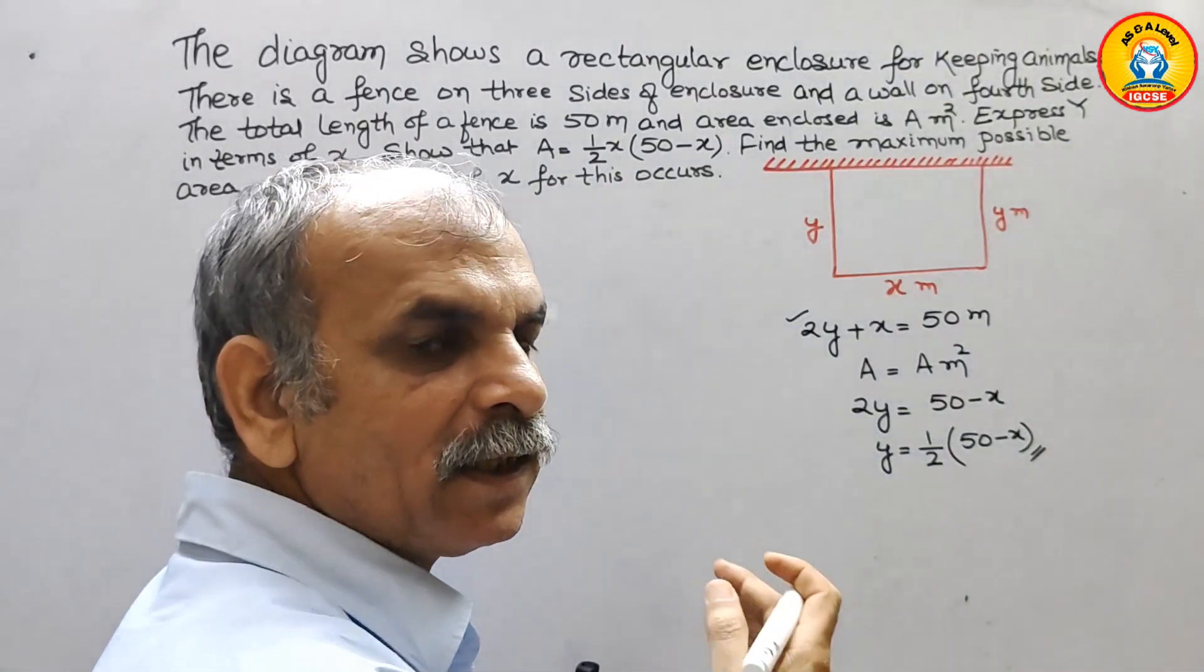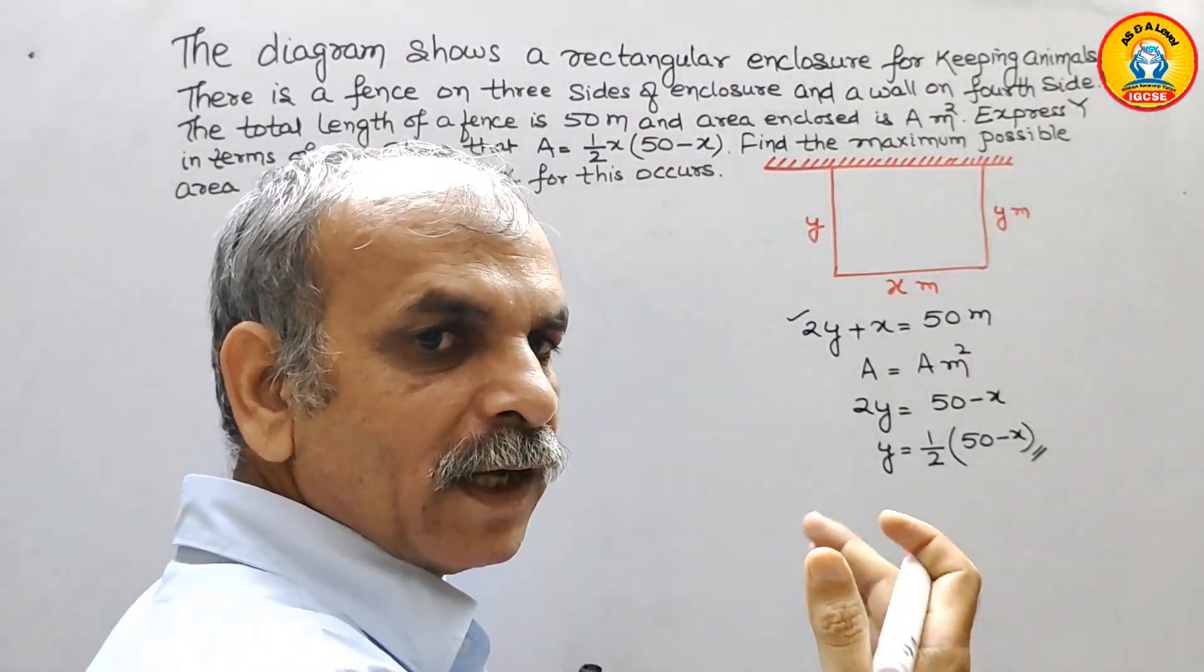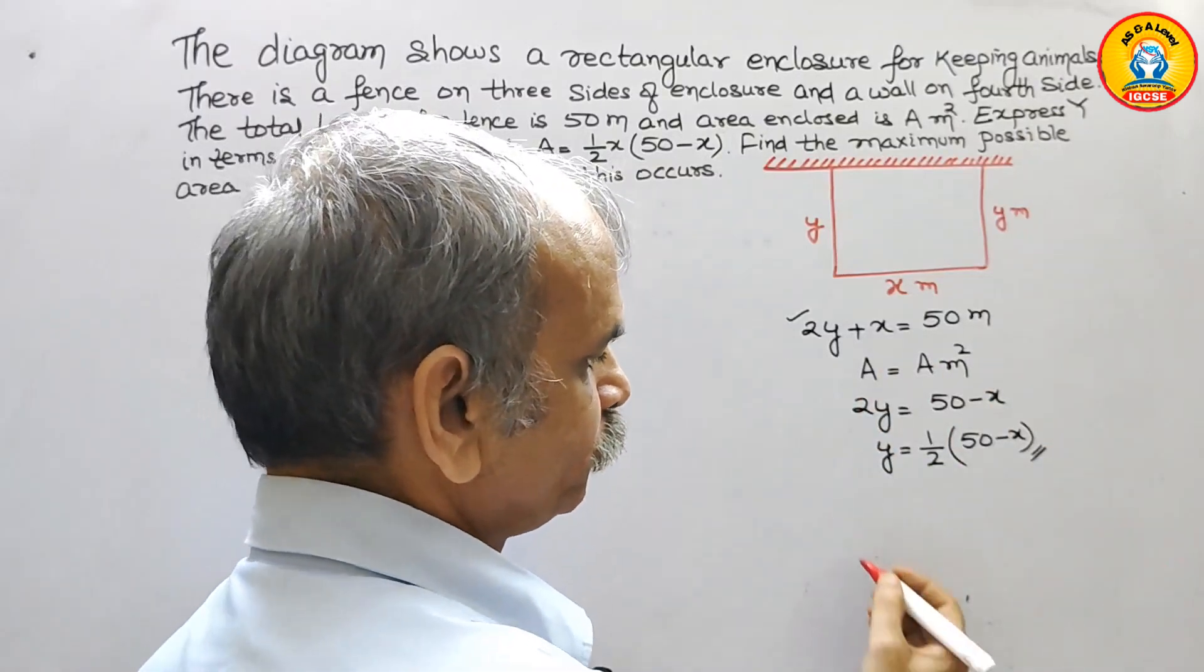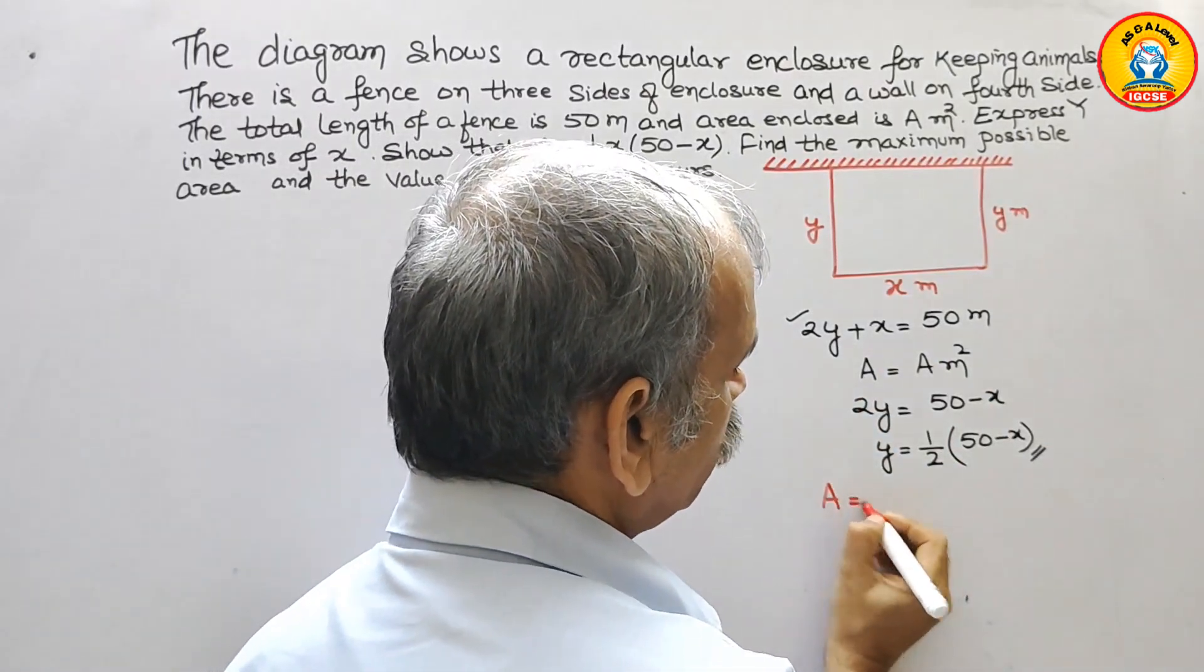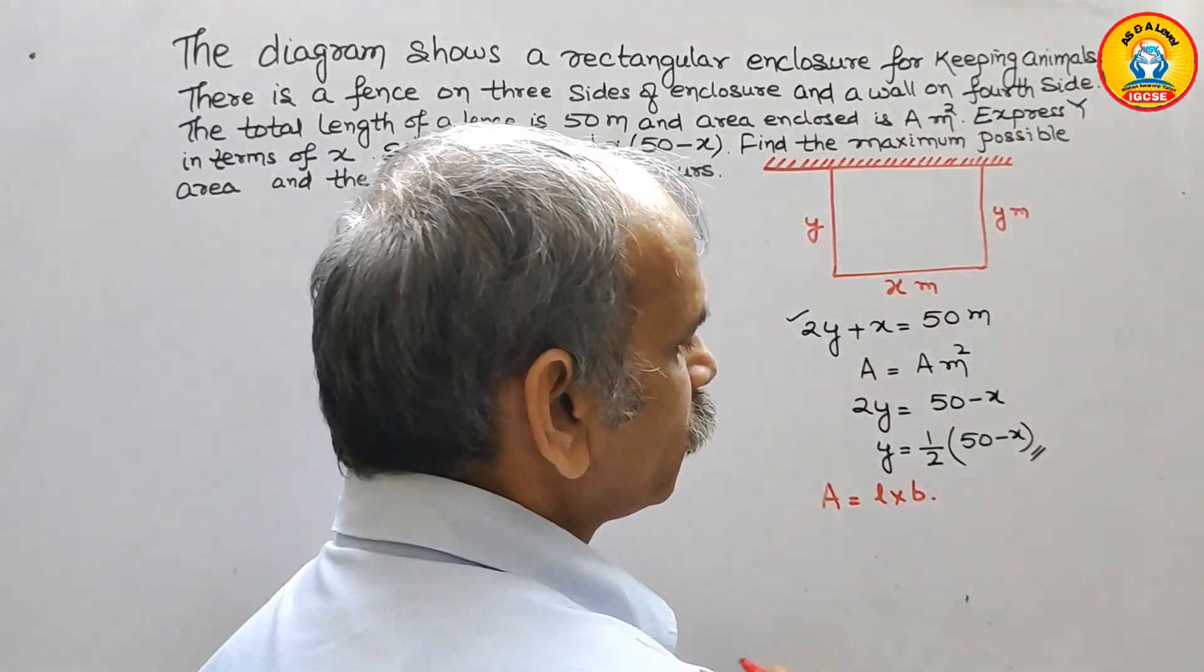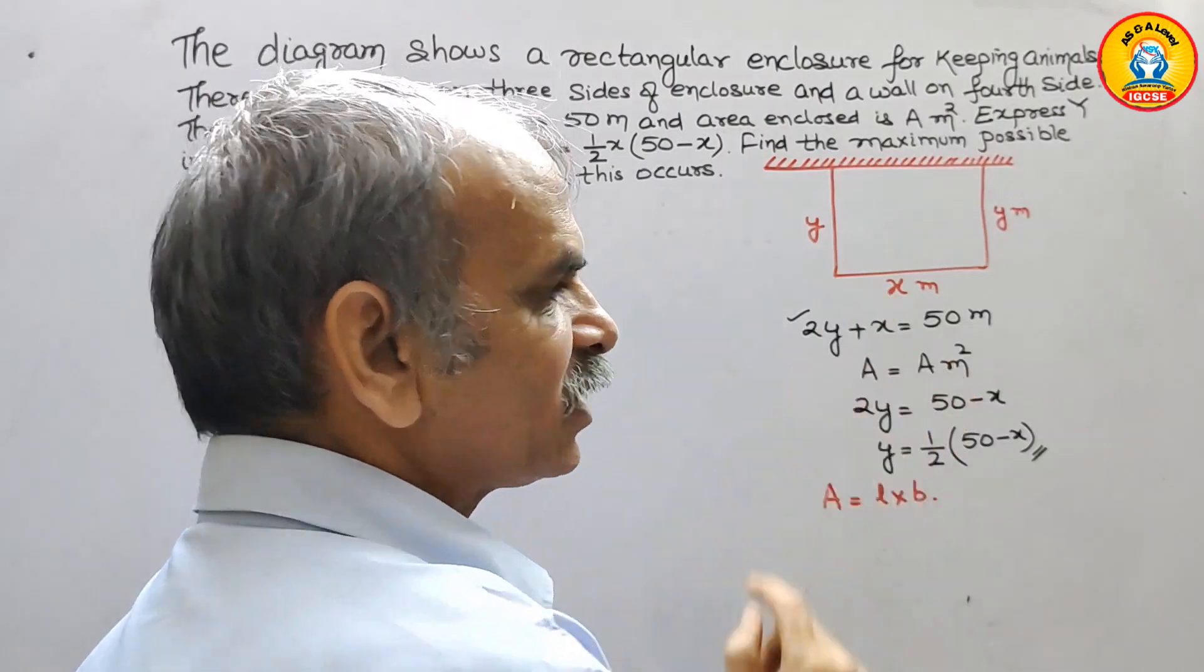So we know the area. Area of rectangle is length into breadth. Area is equal to length into breadth. So we know that length is x.